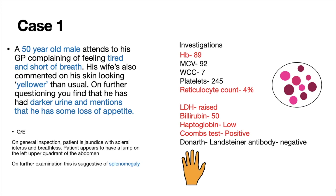Moving on to the patient's blood film, what is described is polychromasia with spherocytosis. This refers to the red blood cells not only being different sizes but also different colours, and they also develop a spherical shape — hence the name.